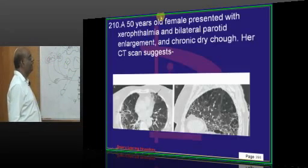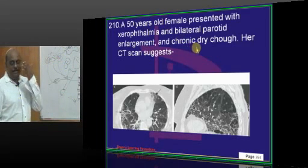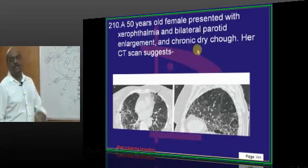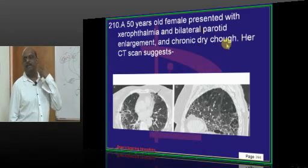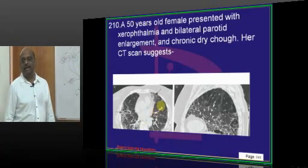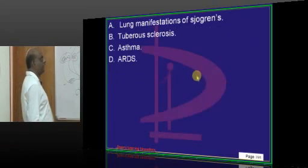How will you identify? Xerophthalmia, dry eyes, bilateral parotid enlargement, dry cough—all because of the lymphocytic salivary gland destruction which is the classical feature seen in Sjogren's.